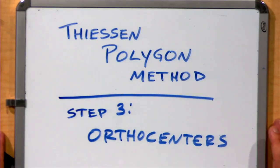So the next step in our Thiessen polygon method is going to be to find orthocenters of the Delaunay triangles that we created earlier.